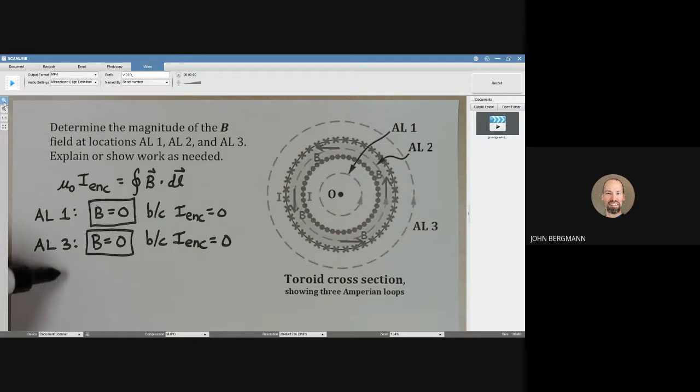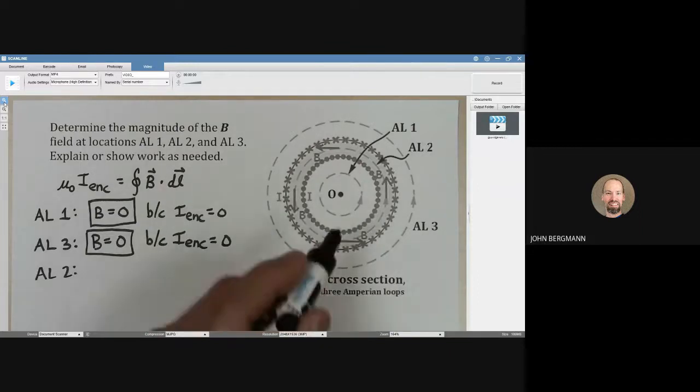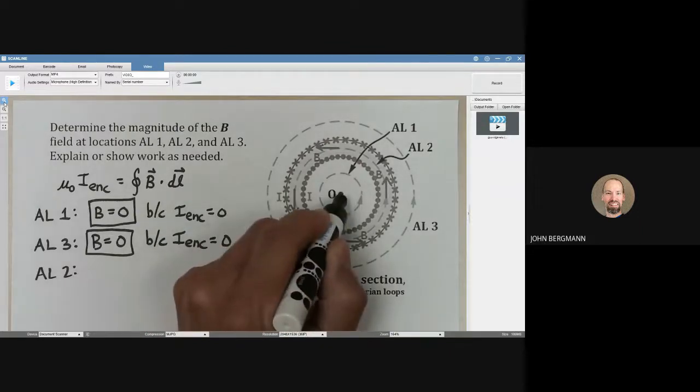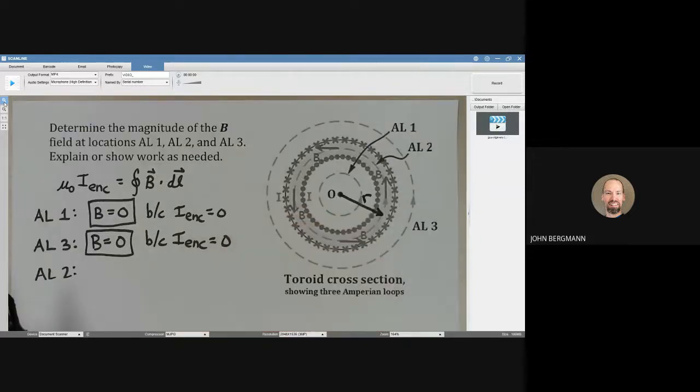Well what about for Amperian loop number two? I could have drawn R in for Amperian loops one and three but I didn't want to mess up the diagram. So Amperian loop number two I will draw the R in for that. It goes to right there.